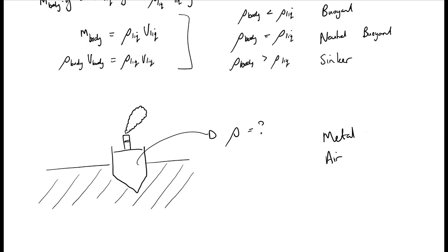We've seen that if the density of the body is less than the density of the liquid it is replacing, it will be buoyant — it will actually float. So although the force of the ship working downwards is quite big, the buoyancy force working upwards is just as big for it to float. It is because of the volume of liquid being displaced actually wanting to run back into that volume, which is now filled with a lower density fluid.